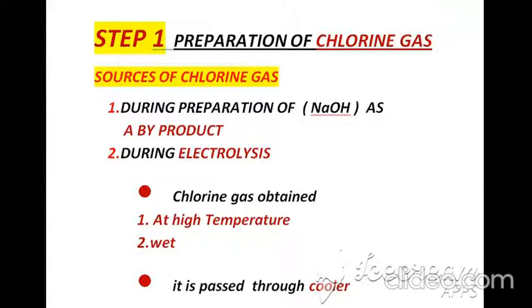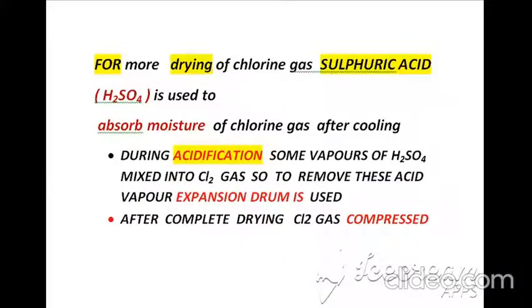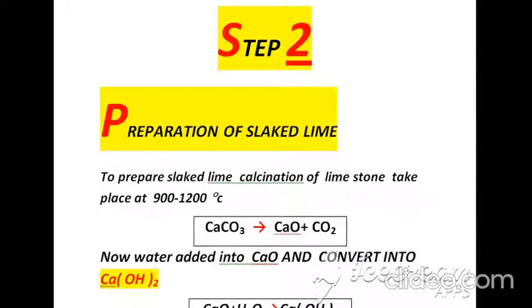That gas requires some processing before use, as it has high temperature and is in wet condition. So we pass that gas through a cooler to remove moisture. In the second step of drying, we treat chlorine gas with sulfuric acid to absorb complete moisture — that process is called acidification — and after that we compress the chlorine gas for further processing.